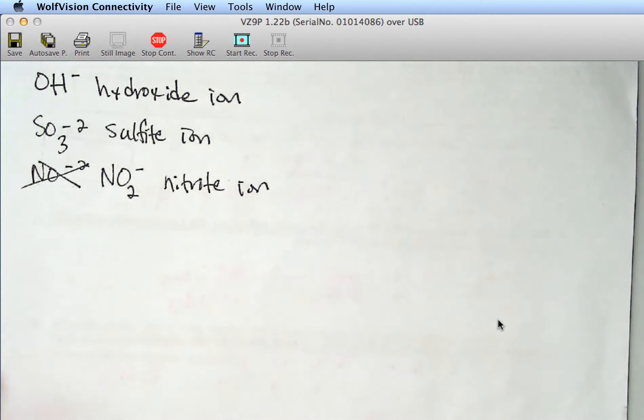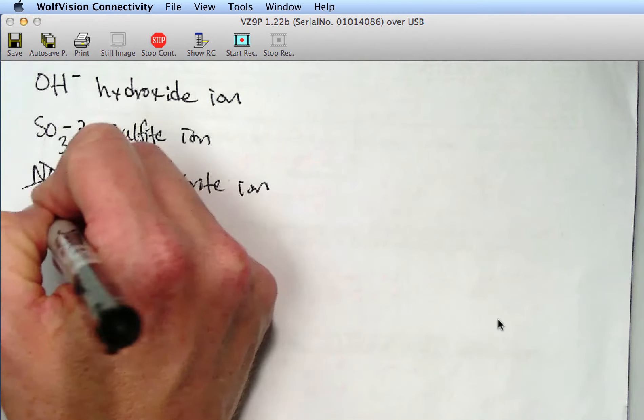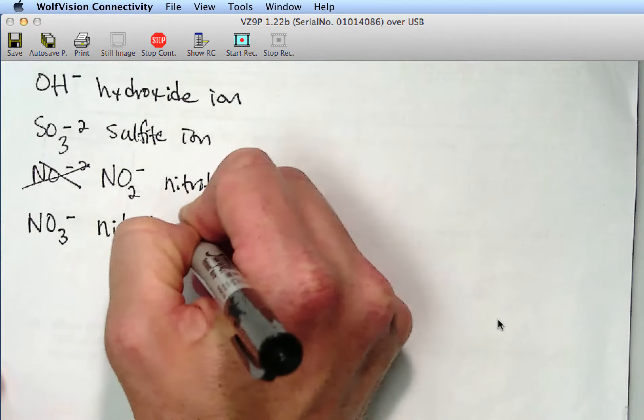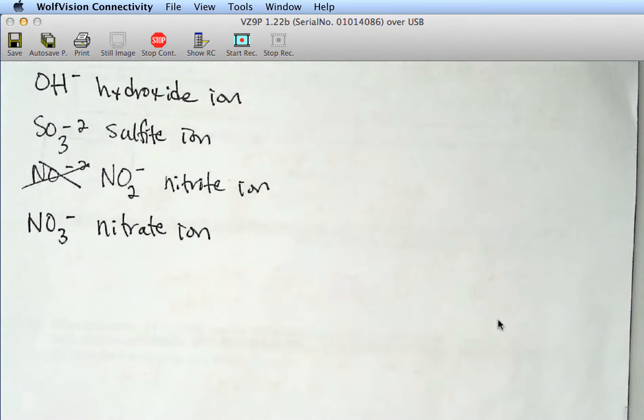What else? Nitrate. Nitrate. Nitrate. NO3 negative. Nitrate ion. Now notice that I'm not just writing hydroxide, or nitrite, or nitrate. I'm writing out the word ion, because that indicates that there's a charge. And we'll learn about that more, too.